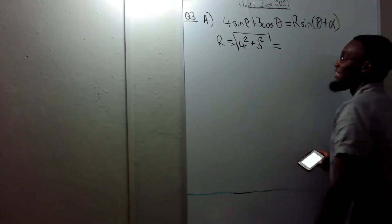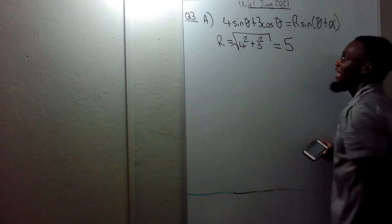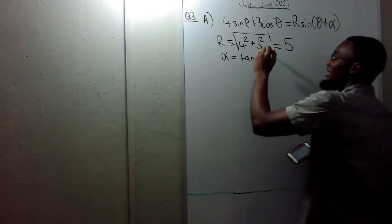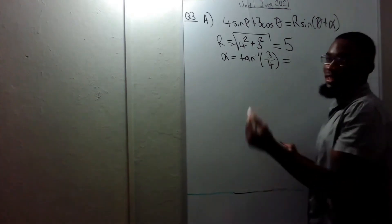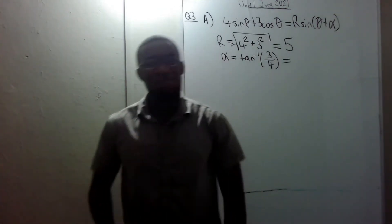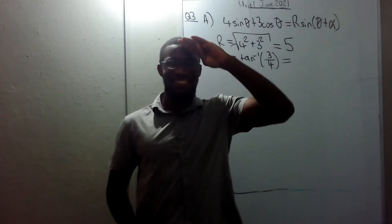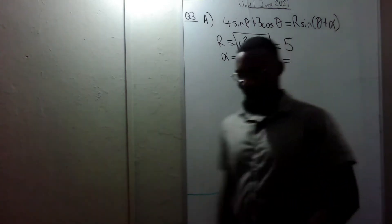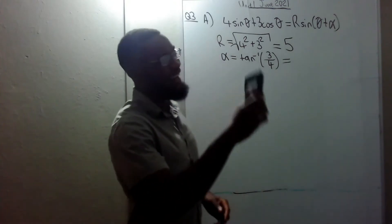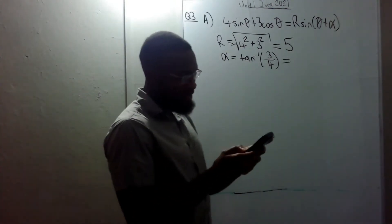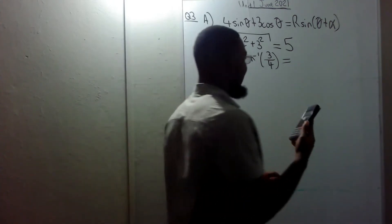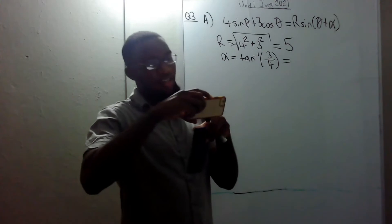That's √(16 + 9) = √25 = 5. Then α is equal to tan⁻¹(b/a). I'll use the calculator — tan⁻¹(3/4) in degrees is 36.9°. The question didn't specify degrees or radians, so you can keep it in either.